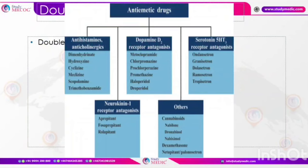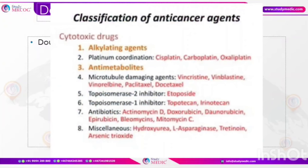Anti-emetic drugs have also been asked previously. The main classification includes antihistamine and anticholinergic drugs — mainly cyclizine and meclizine. Dopamine D2 receptor antagonists are metoclopramide, chlorpromazine, and prochlorperazine, which include first and second line antiemetics. Serotonin 5-HT3 receptor antagonists are ondansetron, granisetron, and other '-setron' drugs. Neurokinin-1 receptor antagonists include aprepitant. Cyclizine is an antihistamine and anticholinergic drug.